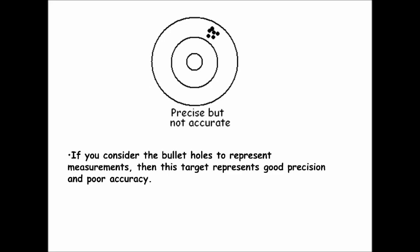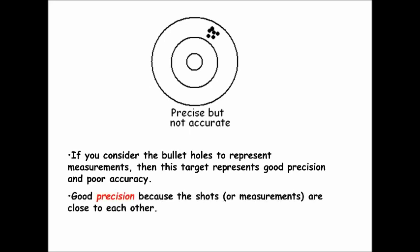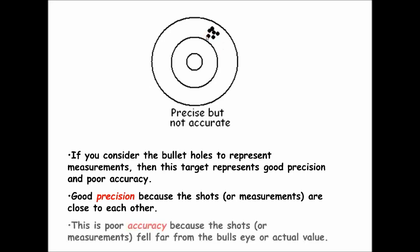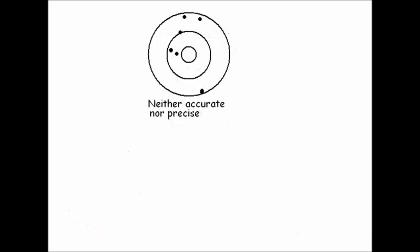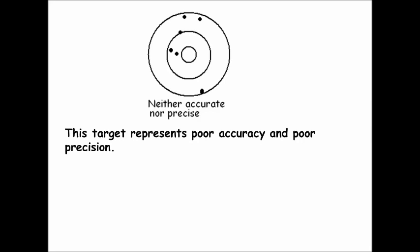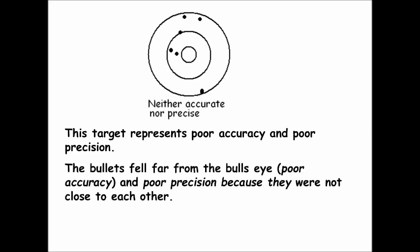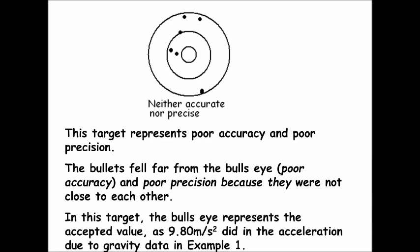If you consider the bullet holes to represent measurements, a target with shots close together but far from the bullseye represents good precision and poor accuracy. Good precision because the shots are close to each other; poor accuracy because they fell far from the bullseye, or the actual value. Similarly, a target with shots scattered far from the bullseye and far from each other represents poor accuracy and poor precision — just like measurements that don't match the accepted value, such as 9.80 meters per second squared in the gravity example.